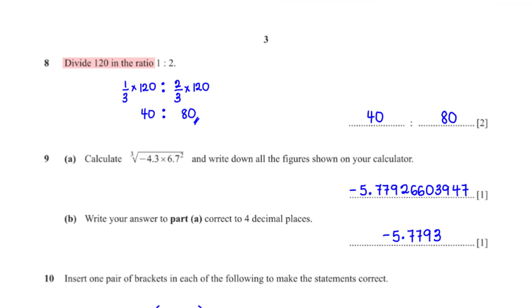Divide 120 in the ratio 1 is to 2. To get the first part of the ratio, we divide 1 by the total ratio of 1 plus 2, which is 3, and multiply by 120, which gives us 40. Then for the second part of the ratio, we divide 2 by the total ratio of 1 plus 2, which is 3, and multiply by 120, which gives us 80. So we have 40 is to 80.